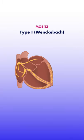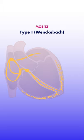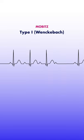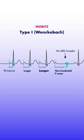Type 1 or Wenckebach second degree AV blocks are caused by an intermittent block of action potentials within the AV node, and eventually a complete failure to conduct an action potential from the atria to the ventricles. On a cardiac strip, you'll see a progressive lengthening of the PR interval until a normally occurring P wave is not followed by a QRS complex.